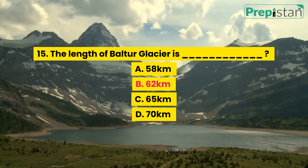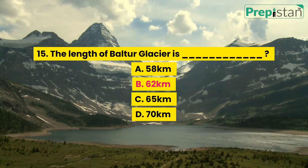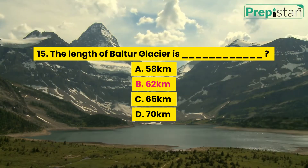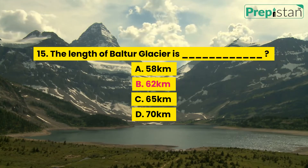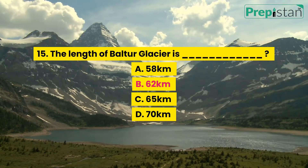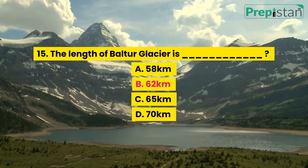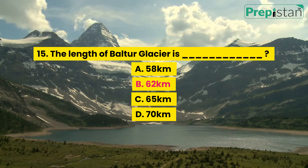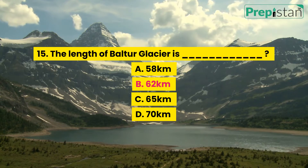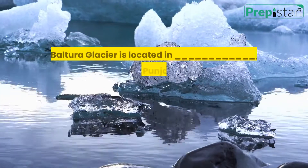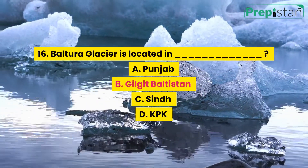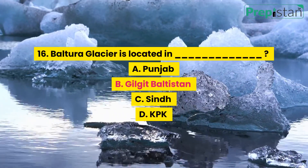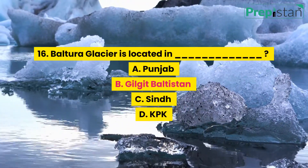Question 15: The length of Baltoro Glacier is blank. A. 58 kilometers, B. 62 kilometers, C. 65 kilometers, D. 70 kilometers.